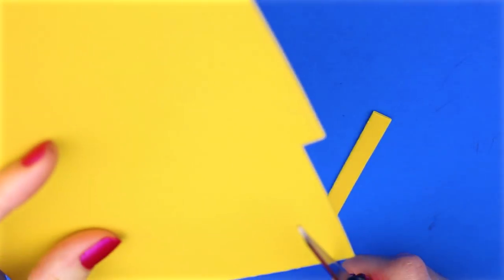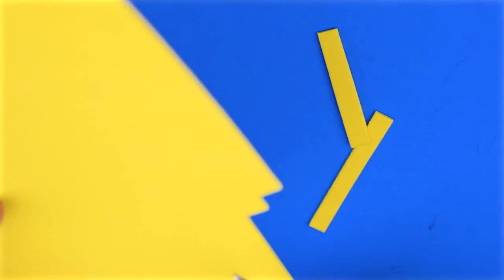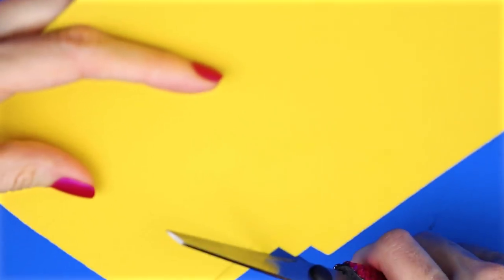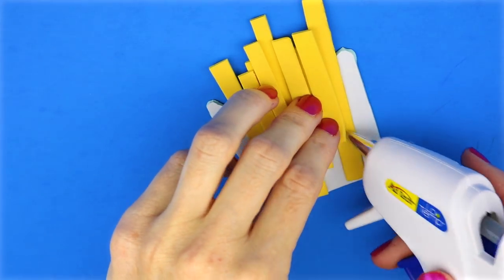Using a piece of yellow foam, I cut out strips to resemble french fries. I arranged the french fries how I wanted them and then I glued them down.